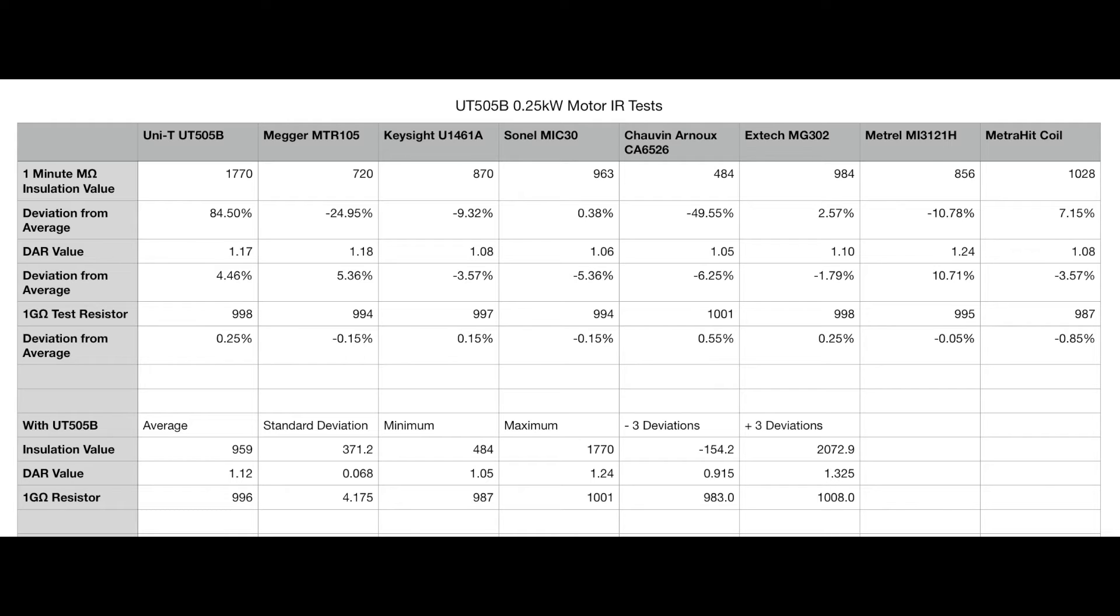The Chauvin Arnoux CA6526 has got the lowest reading. Quite a spread. If we look at the line below, that's the deviation from the average of all the readings, with the UT505B being 85% above the average and the CA6526 being 50% below it. That's quite a significant difference.